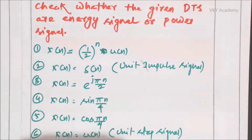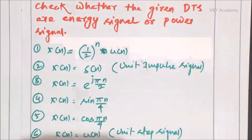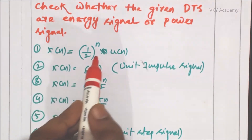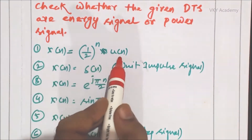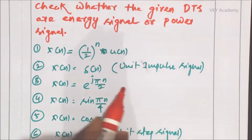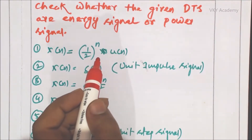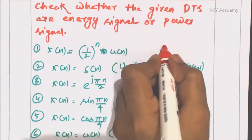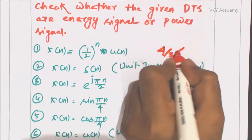Hello everyone. In the previous session we started solving some numericals based on energy signal and power signal. We solved the first question x(n) = (1/2)^n * u(n) and concluded that this particular signal is an energy signal with an energy value equal to 4/3.